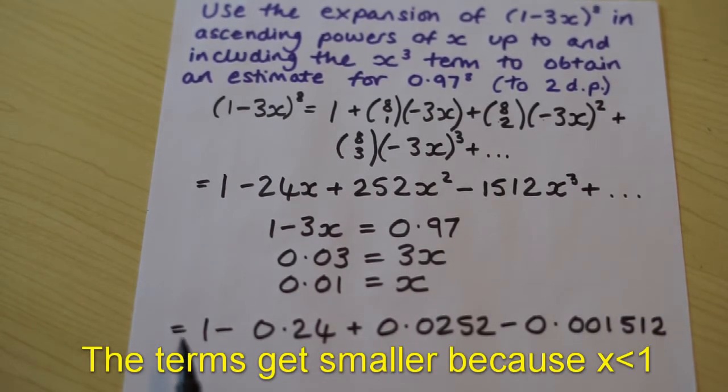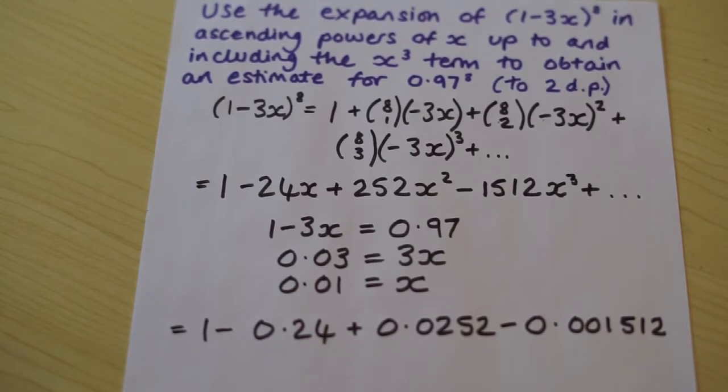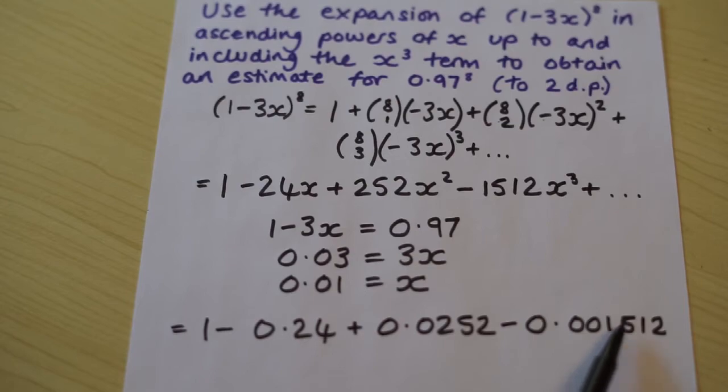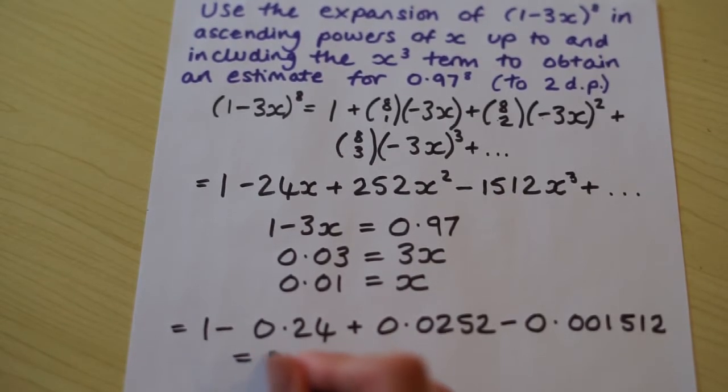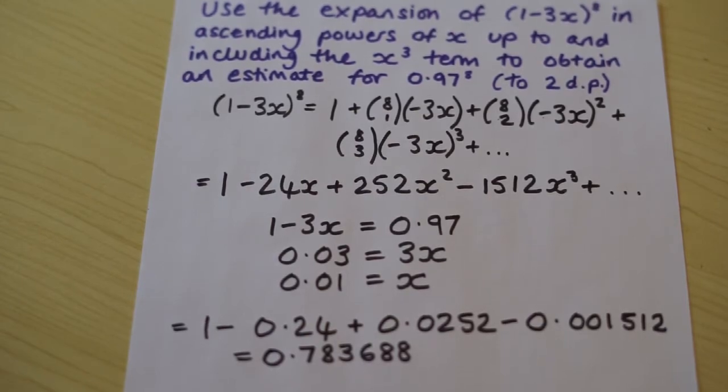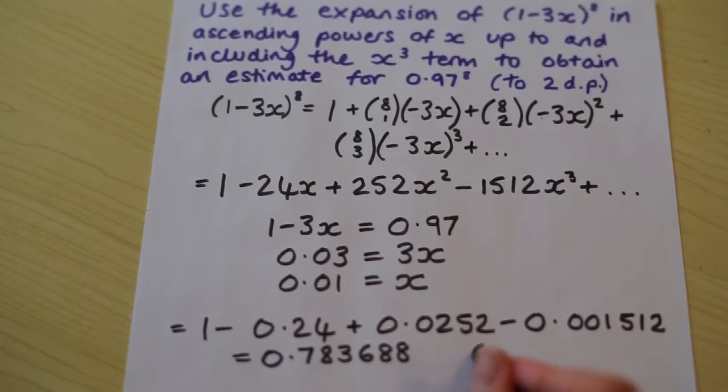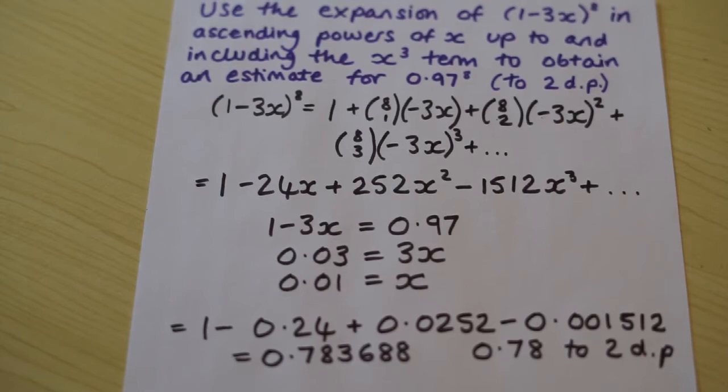Okay, so we can see that as each term goes on, we can see how it's getting smaller and smaller and smaller, which gives us a clue as to why we're told to only go up to the x cubed term. You can imagine if we went to the x to the power of 4 term, that would be really, really tiny. And as we need to give our answer to two decimal places, the next term being so tiny wouldn't have any influence whatsoever on the answer. So we can see now why we're told to go to the x cubed term. So working that out, we find that it equals that. So to two decimal places, it would be 0.78, two decimal places.